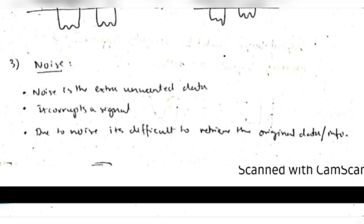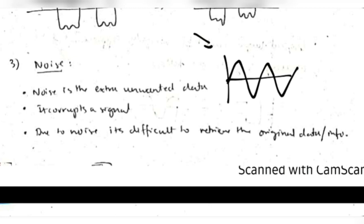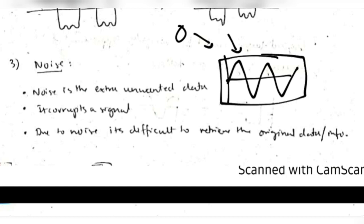Third, noise: external sources generate signals that interfere with and corrupt the original data. Filters are used to remove noise and recover the approximate original data.